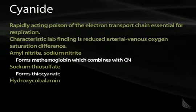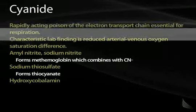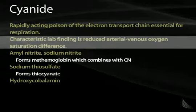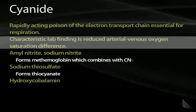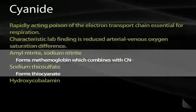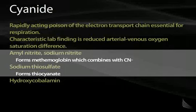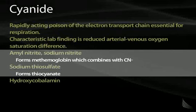For cyanide poisoning, cyanide works by blocking the electron transport chain, which is essential for cellular respiration — meaning the ability to use oxygen. The classic lab finding is an arterial and venous blood gas showing that the patient is not using oxygen: arterial oxygen will be 100 and venous oxygen will also be 100, because cyanide prevents the use of oxygen. The antidotes are nitrites and sodium thiosulfate, which scavenge the cyanide out of the body.